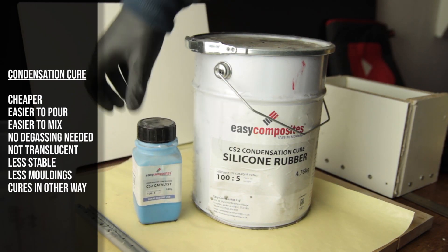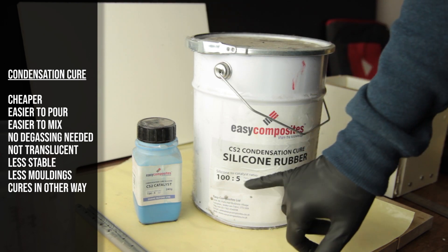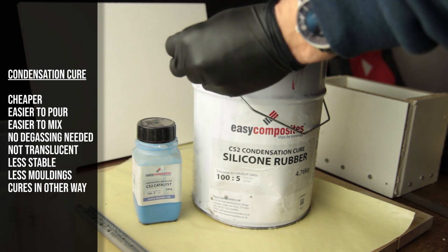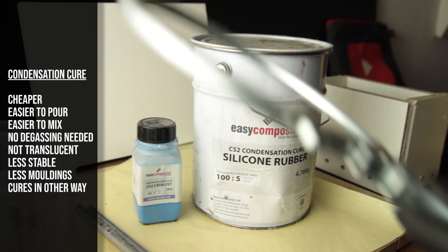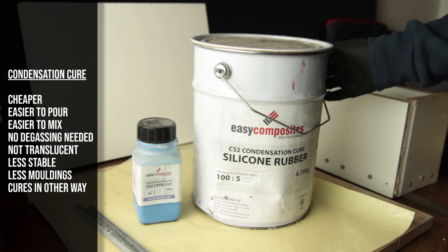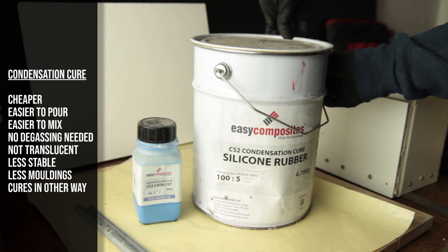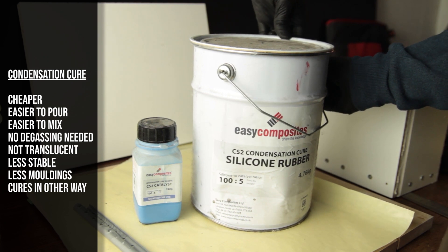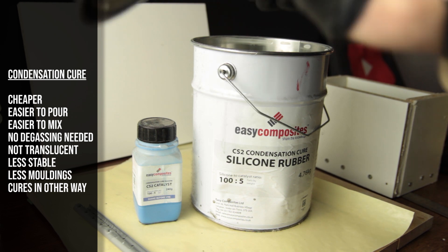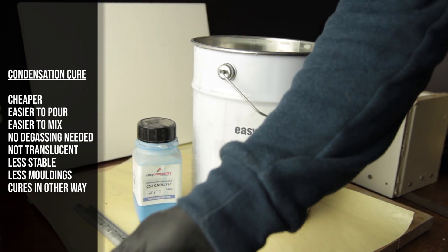An important thing to note is that you have different types of silicons. So this is a CS2 condensation cure. It's a different characteristics of the silicon. So this one is cheaper. It's easier to pour. In theory you don't need to degas it. It has a lower viscosity. So this is an advantage for mixing.